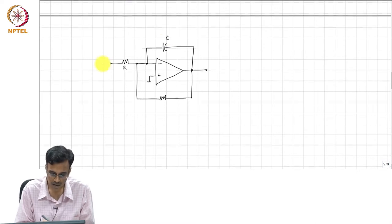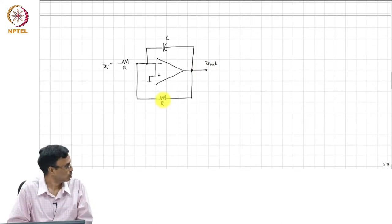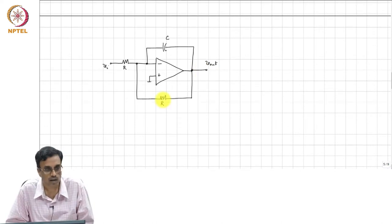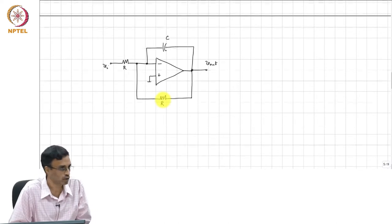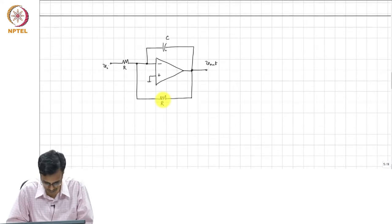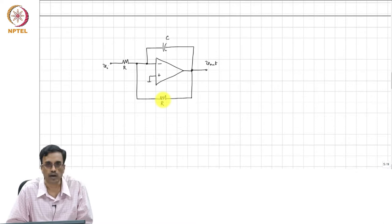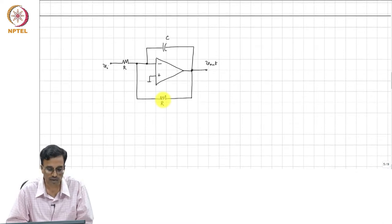This is C, this is V_I, this is V_out, and this is R. The op-amp is ideal and there is negative feedback around the op-amp. Let us assume that the circuit is working, meaning that none of the voltages or currents inside this network go to infinity.